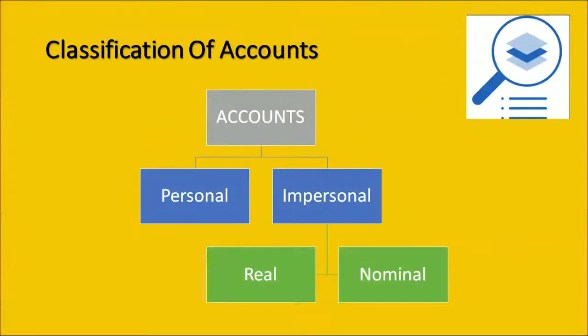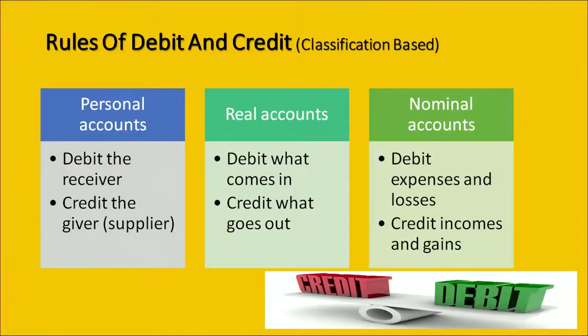Let's classify accounts into various categories. Accounts can be classified into personal accounts or impersonal accounts, and impersonal accounts are further categorized into real and nominal accounts. Personal accounts — like Ram's account or Sham's account — follow the rule: debit the receiver and credit the giver. Real accounts can be tangible or intangible; the rule here is: debit what comes in and credit what goes out. Nominal accounts are your expenses or income accounts; the rule is: debit the expenses and losses, and credit the income and gains.